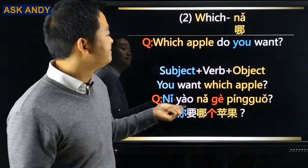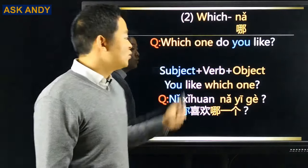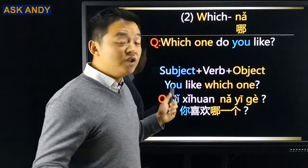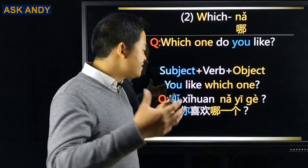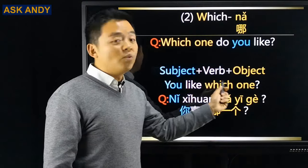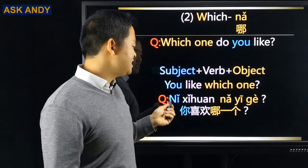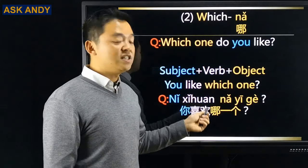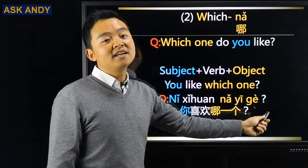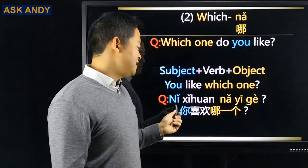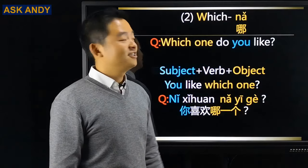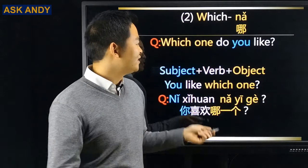'Which one do you like?' Rearrange to 'you like which one,' and translate: 你喜欢哪一个?